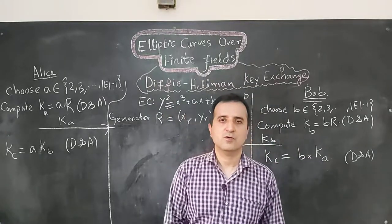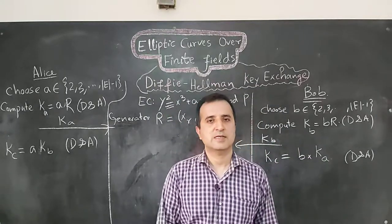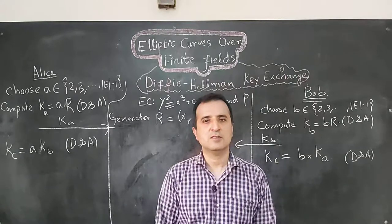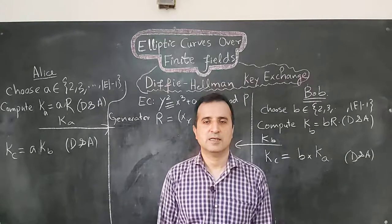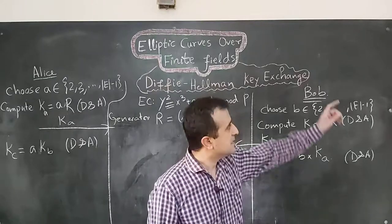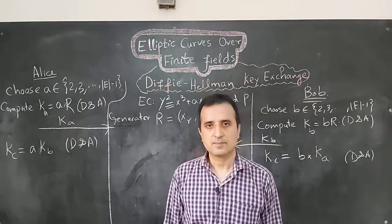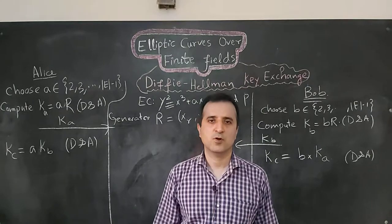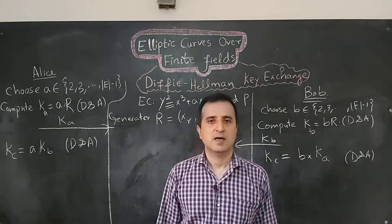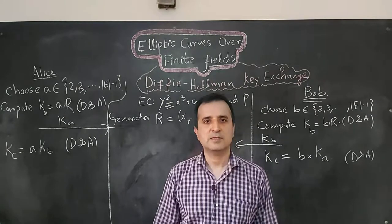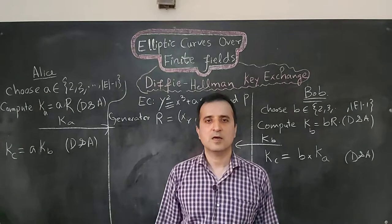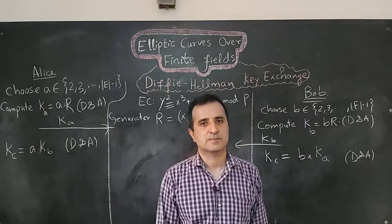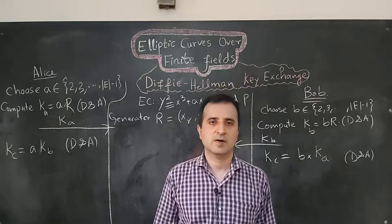A few lectures ago, we discussed in detail how the double-and-add algorithm works. If you have not seen that lecture, I recommend you see it. The double-and-add algorithm works in polynomial time, thus enabling Alice and Bob to quickly compute their common private key.